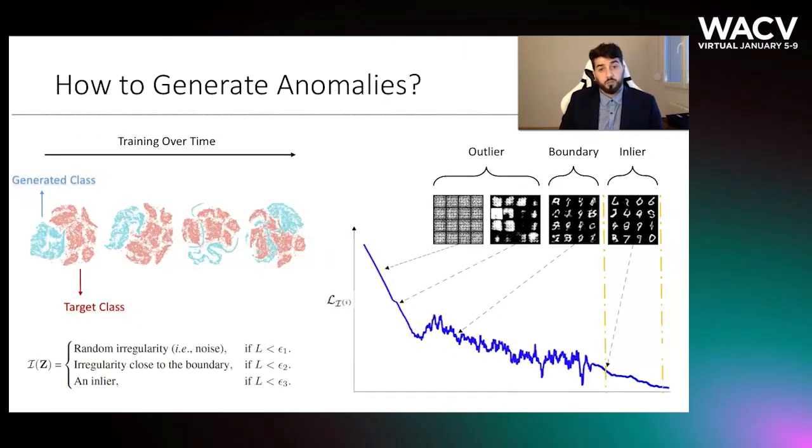For generating abnormal samples, we focused on the well-known generative adversarial network, GAN. This network generates samples with the same distribution of training ones, which in our case are related to normal data. As we can see in the figure, during the learning process, the ability of the generator network to create data similar to the target class is gradually improving. Regarding this analysis, we decide to benefit from the training process of GAN for generating outliers.